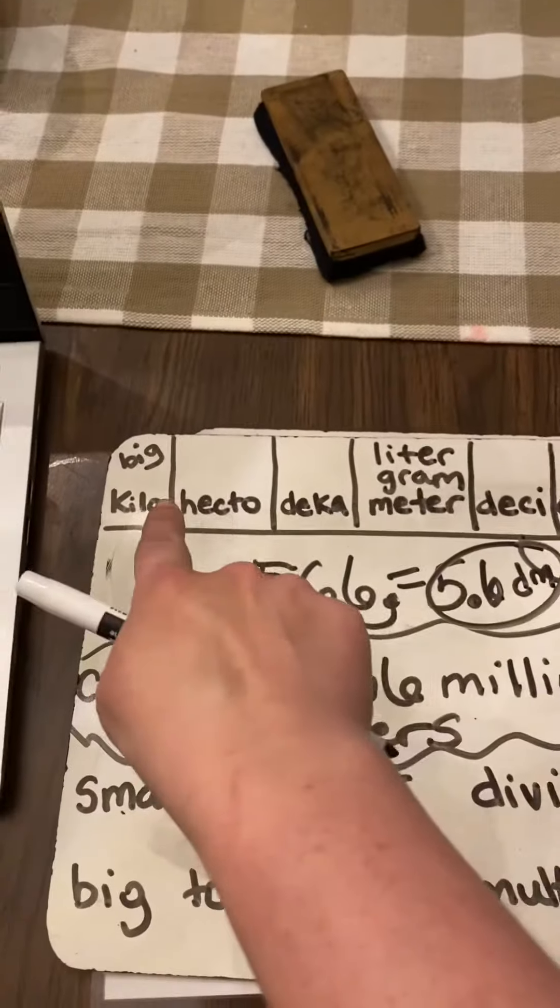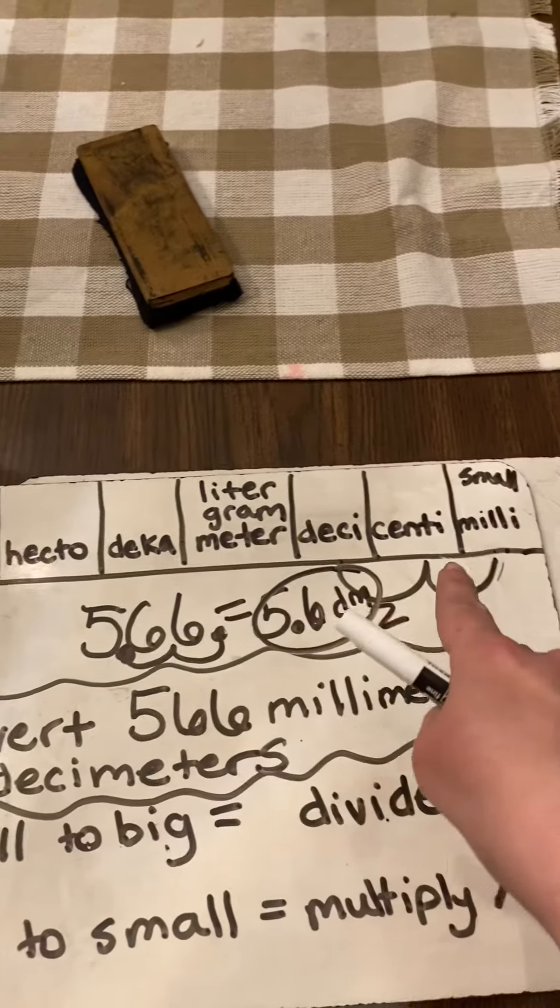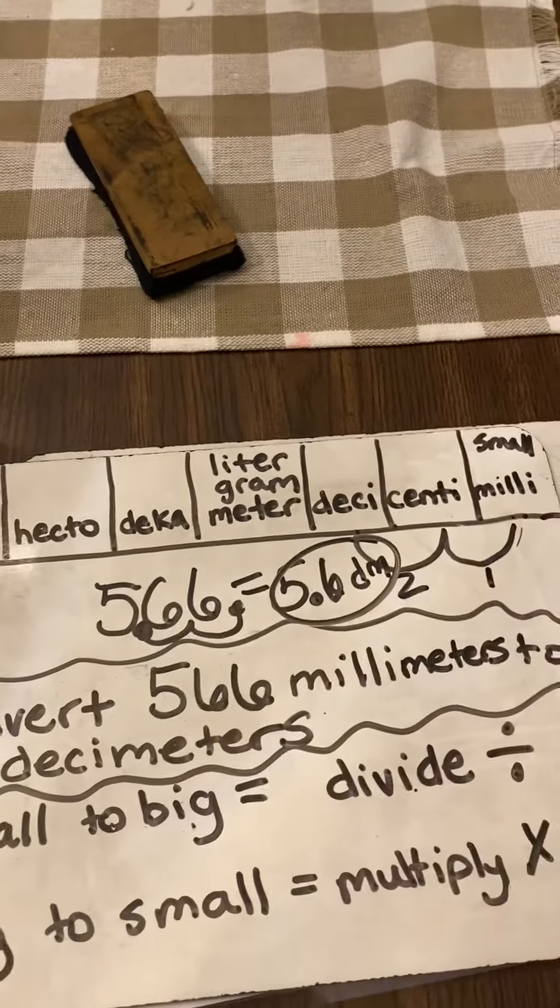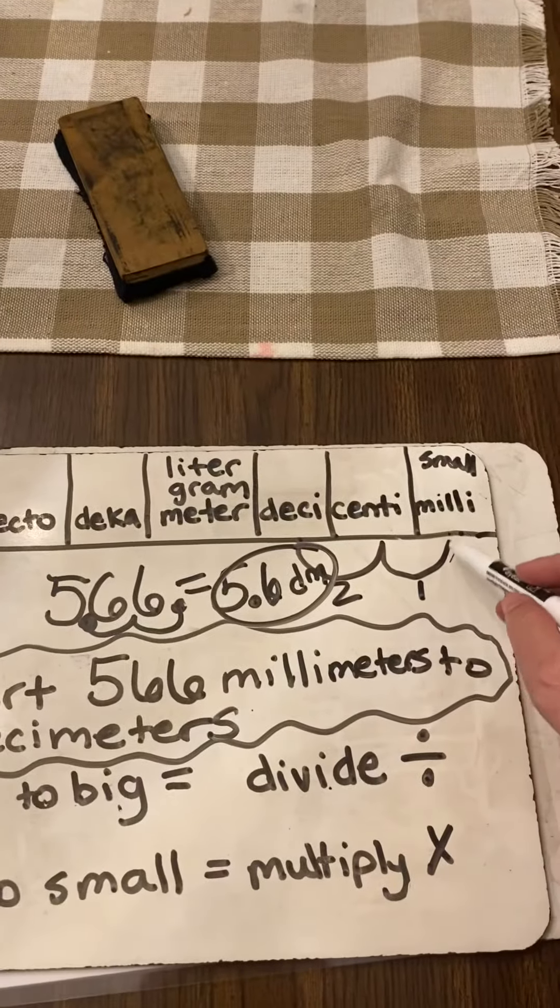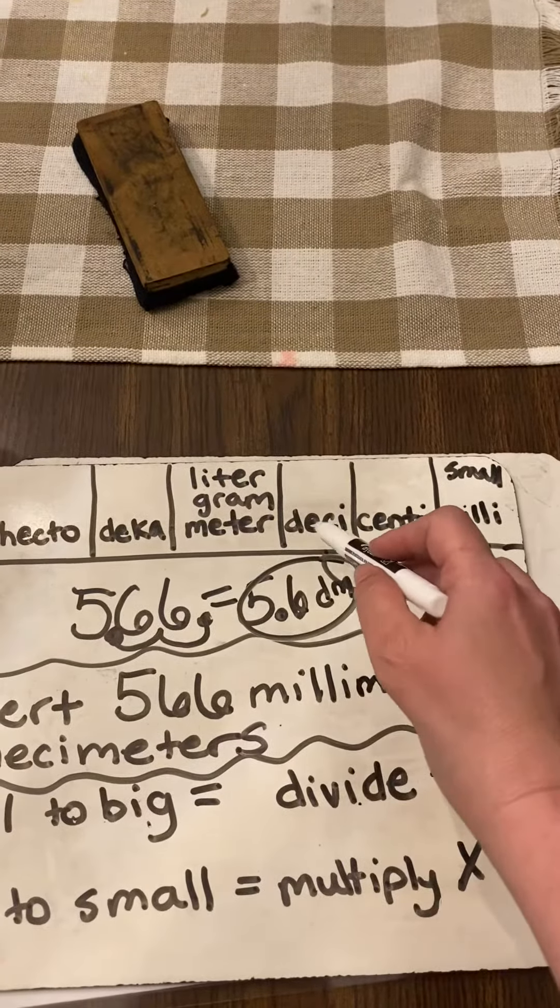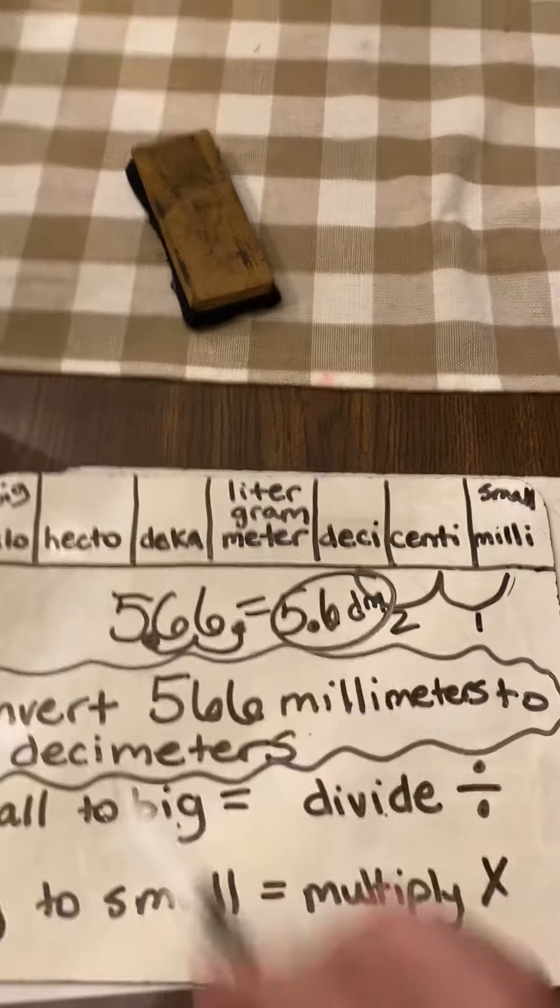So, this is a really cool thing to draw out and have handy. You'll find it in your workbook as well. But it's a great way to visually see how many times we're moving the decimal.